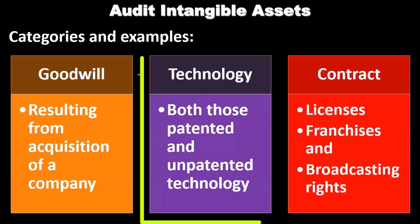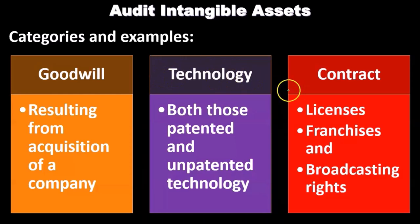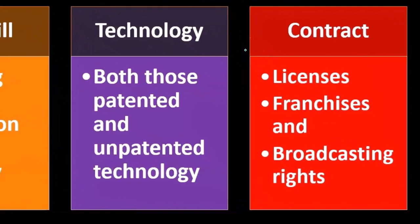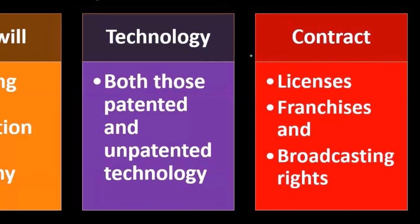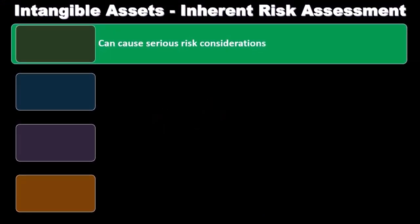Technology — both patented and unpatented types — is another category. Then we have contracts, such as licenses, franchises, and broadcasting rights. These are contracts and another kind of intangible asset.